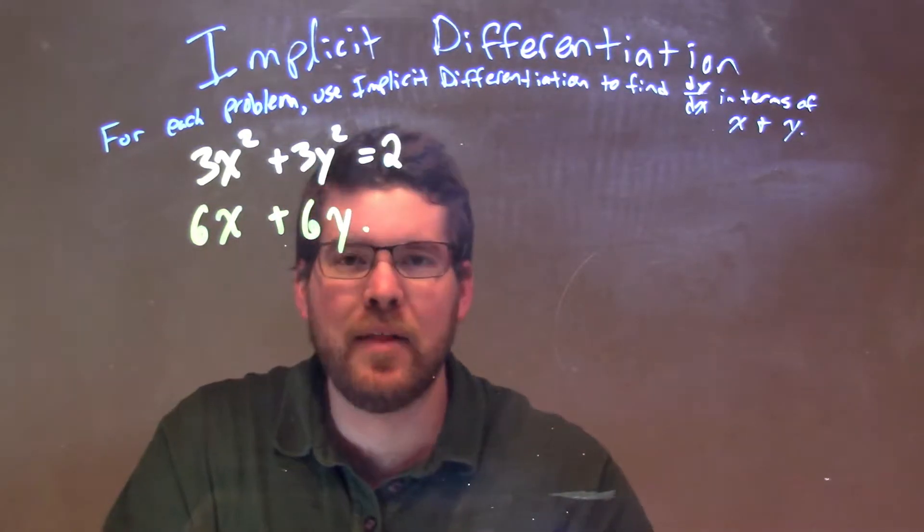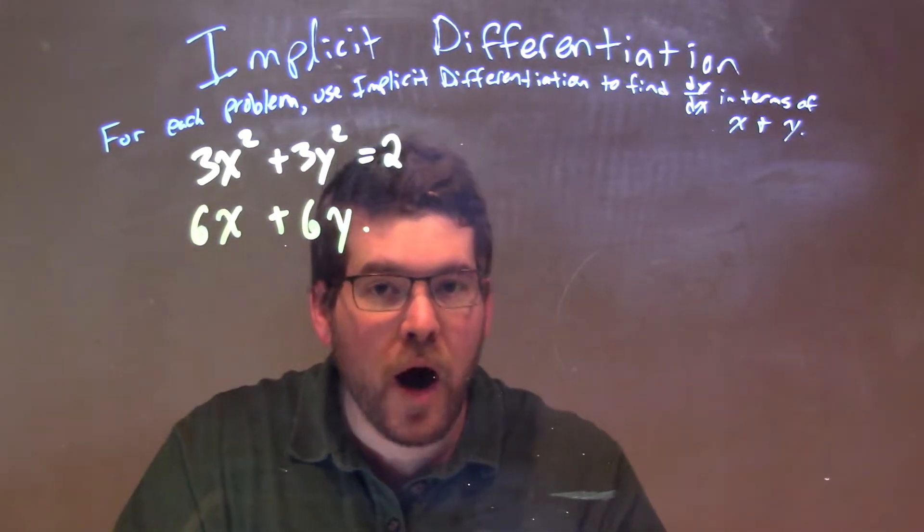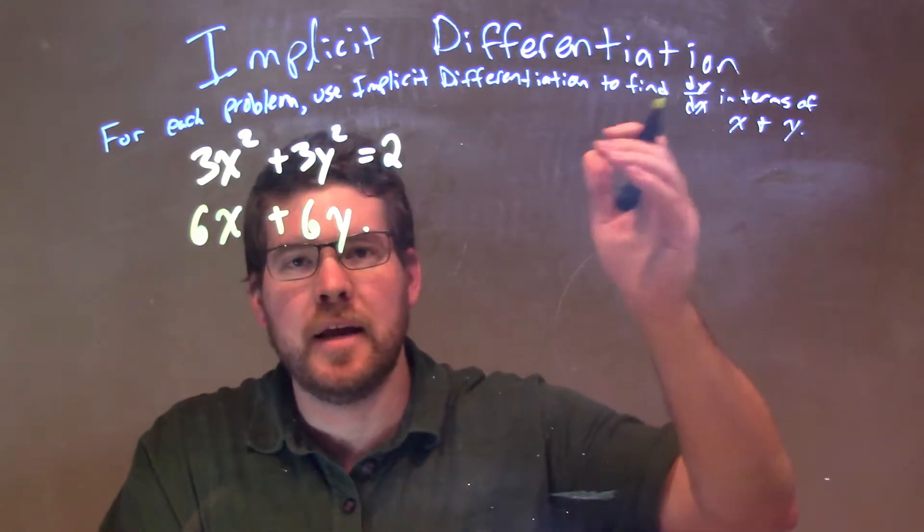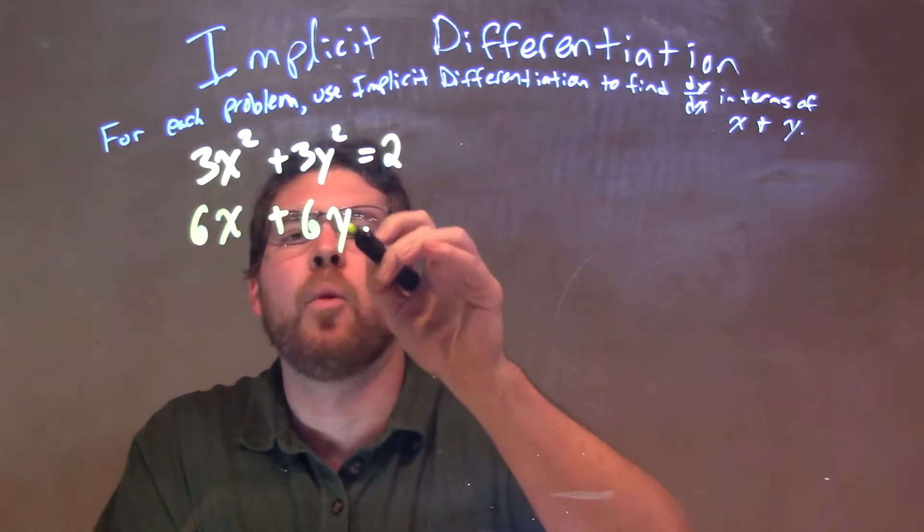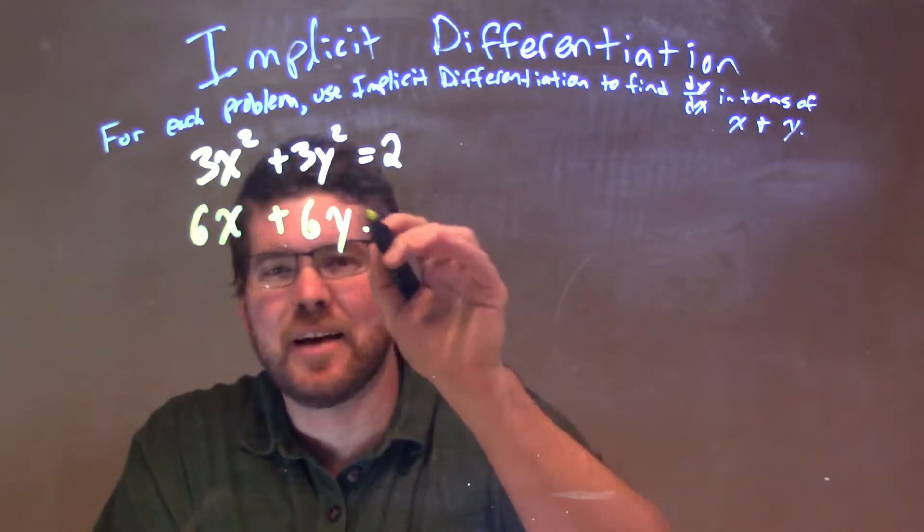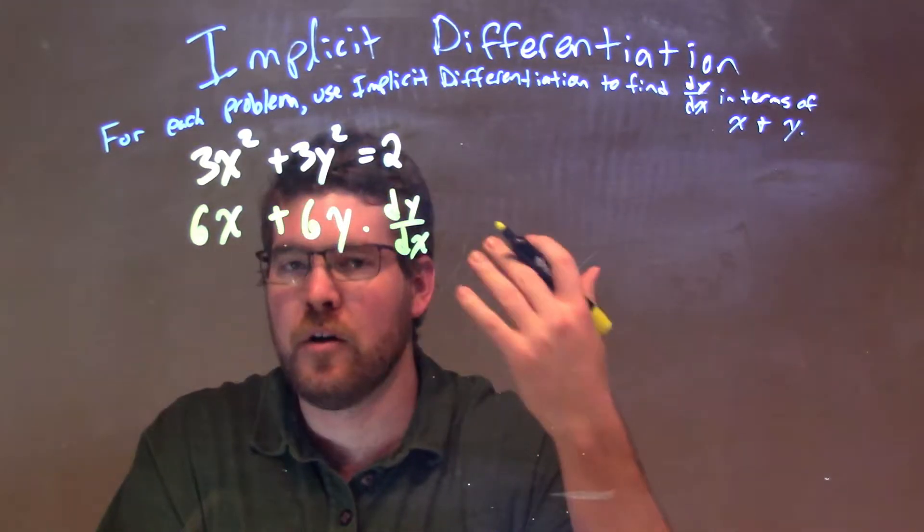But now I need to multiply that by the derivative of y. Since we're finding dy/dx with respect to x, the y term is kind of like a chain. We have dy/dx - that's the derivative of y.